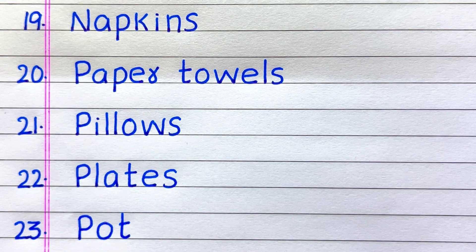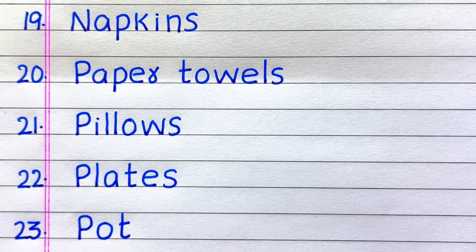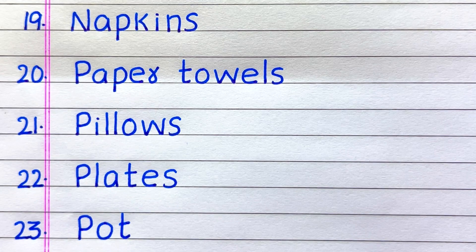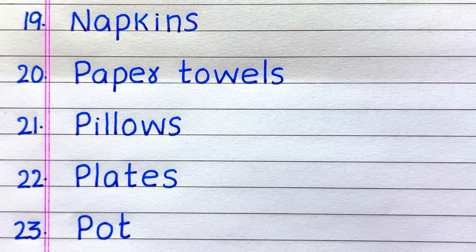Nineteenth name of a domestic article is napkins. Twentieth, paper towels. Twenty-first, pillows. Twenty-second, plates. Twenty-third, pot.